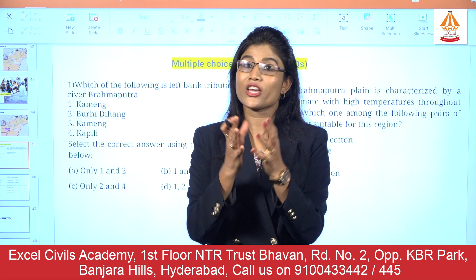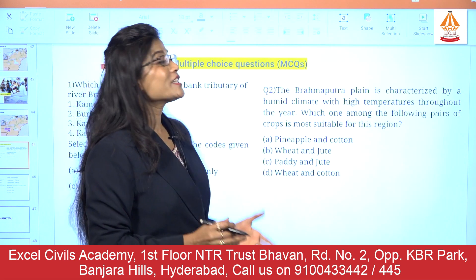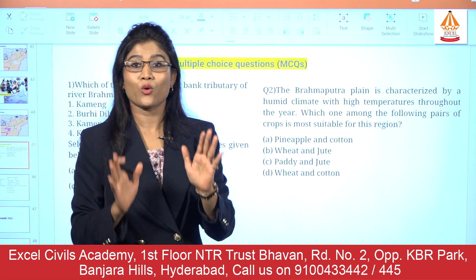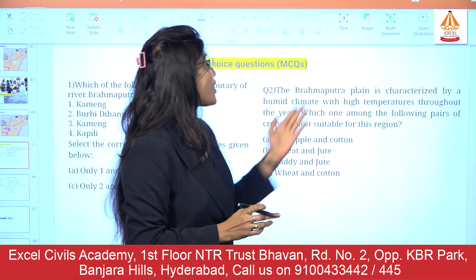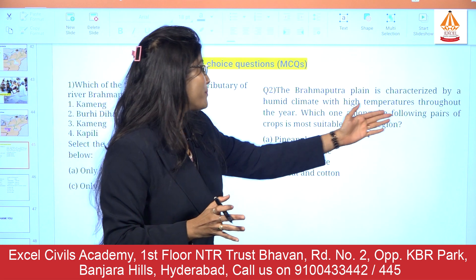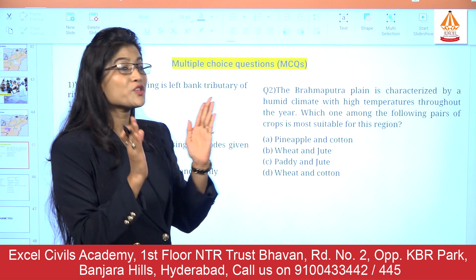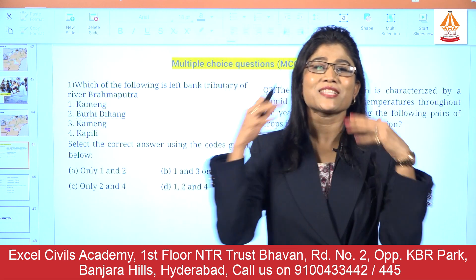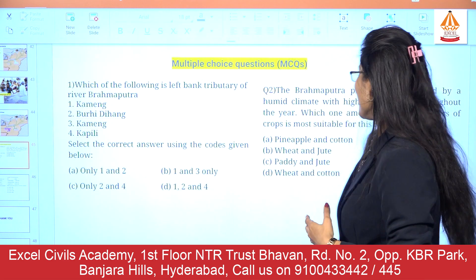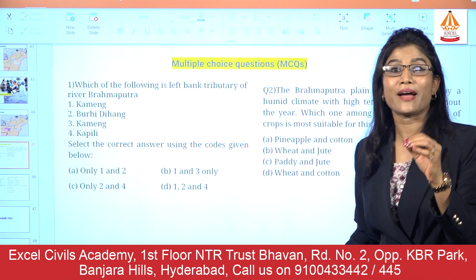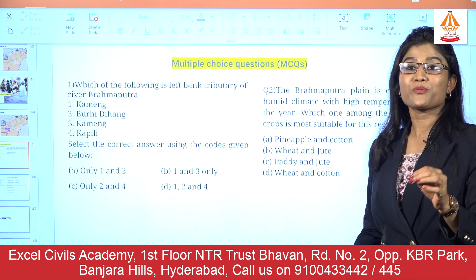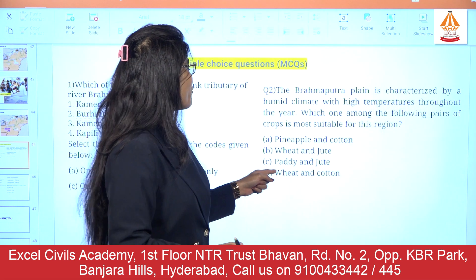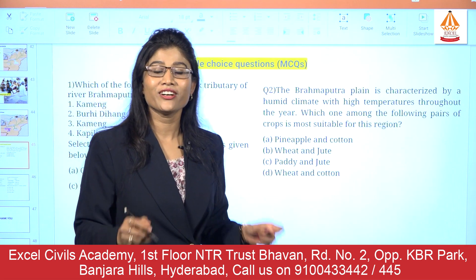The second question: the Brahmaputra plain is characterized by a humid climate with high temperatures throughout the year. Which one among the following pairs of crops is most suitable for this region? The options are: pineapple and cotton, wheat and jute, paddy and jute, or wheat and cotton. I would really like to see your answer in the comment box.